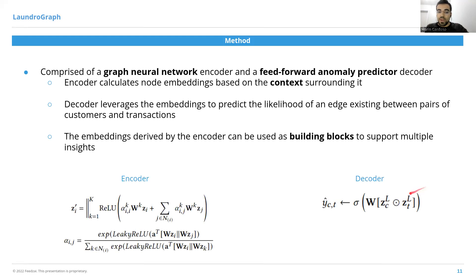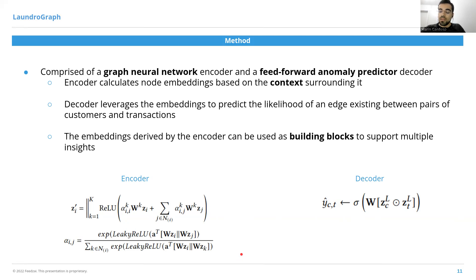I have two equations here for the encoder and the decoder. The encoder uses the graph attention network message-passing operator, which calculates an attention coefficient per edge indicating how important that edge is for the representation of that node. The decoder uses these representations, combines them through a Hadamard product, and then applies a sigmoid non-linearity to obtain the probability.